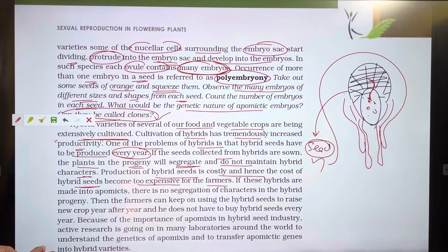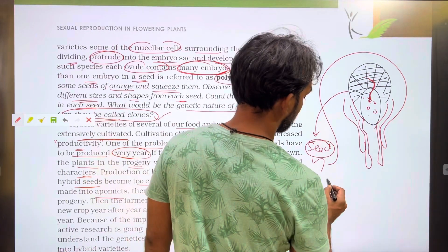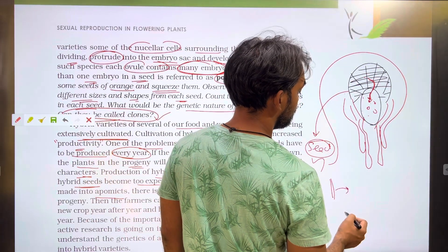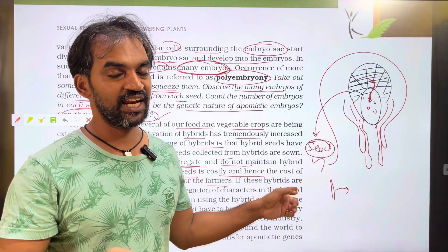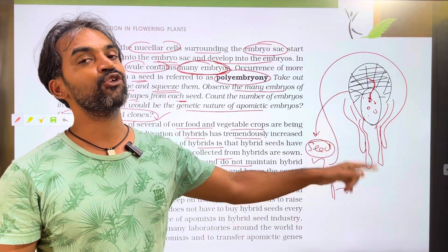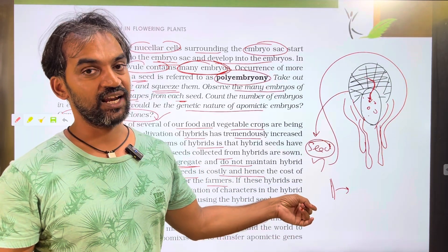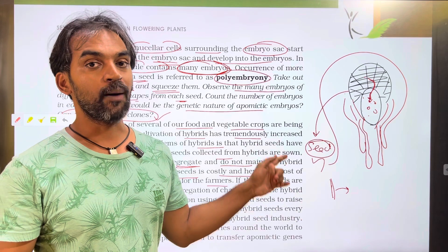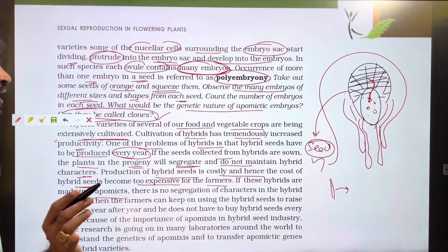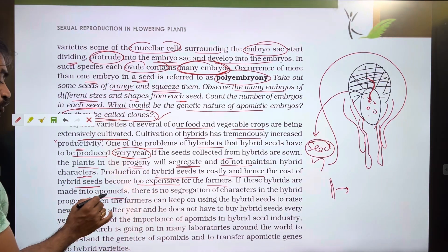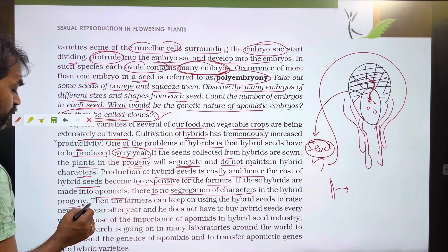If these hybrids are made into apomictic, once a hybrid is prepared in the laboratory, that hybrid produces apomictic seeds — which are clones. The plant character continues without mixing of characters, because it is not sexual reproduction. There is no segregation of characters in the hybrid progeny.